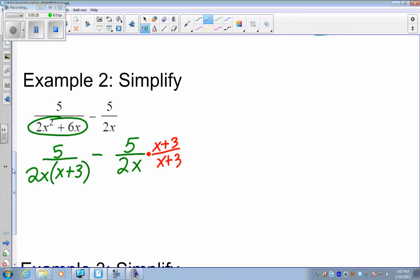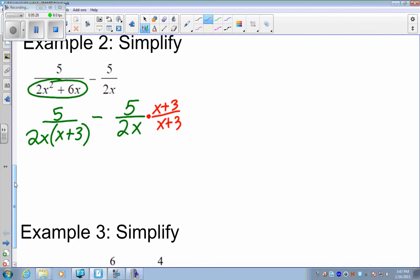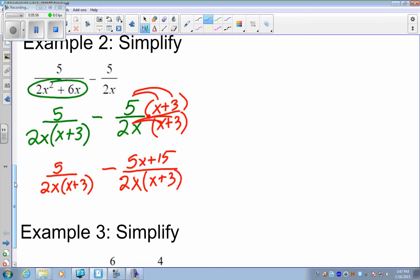Multiplying that out, I'm just going to carry this first fraction down. Subtract 5x plus 15. Actually you don't have to distribute the 2x in. You can just leave it. It actually is beneficial for the next step. So we know we have like denominators. We have a 2x times x plus 3 and a 2x times x plus 3. So, I'm going to bring that across. And in the numerator we have 5 subtracting all of this, 5x minus 15.